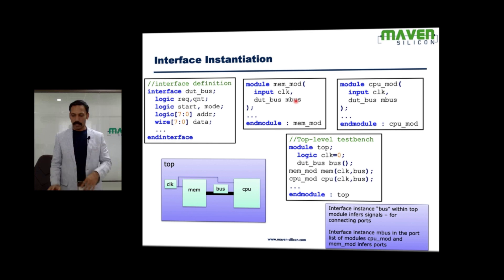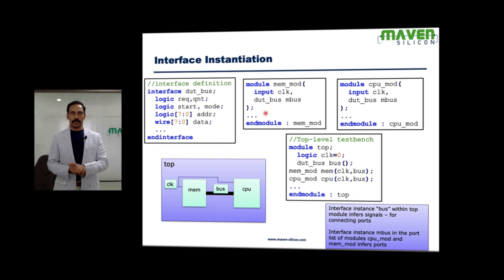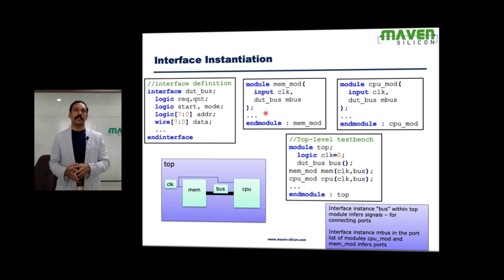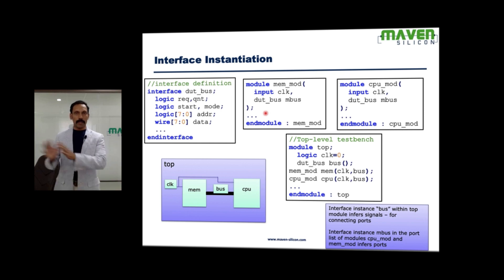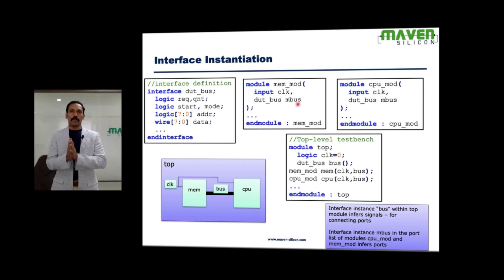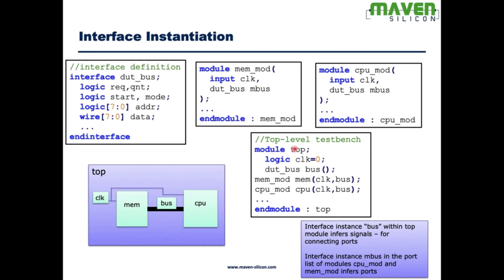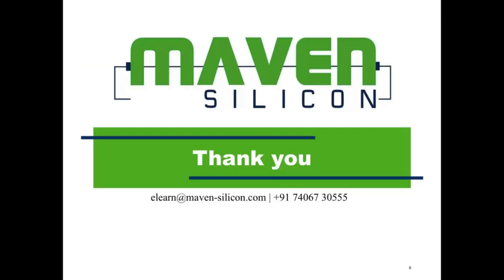The question about signal direction: we haven't explicitly defined directions, and the direction depends on how signals are used within the module. Interface also provides a construct called modport, which allows you to make directions explicit. If the interface instance is used within the port list it will be inferred as ports; if it is used inside the module body but not in the port list, the interface instance will be inferred as signals, and that's how the connection happens between lower-level modules.